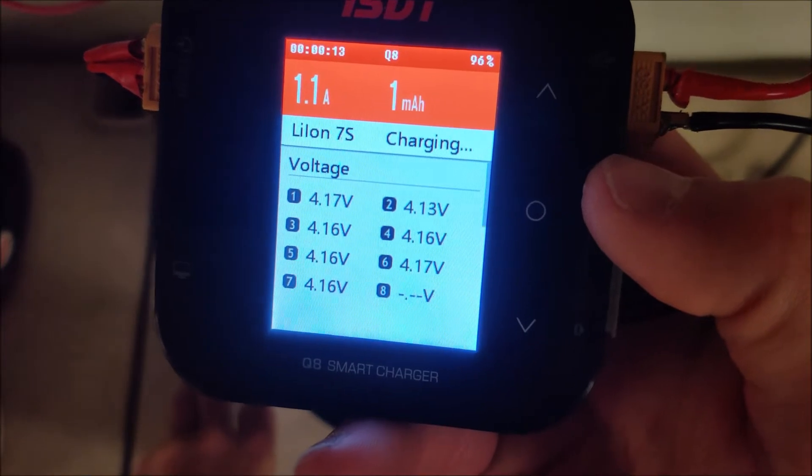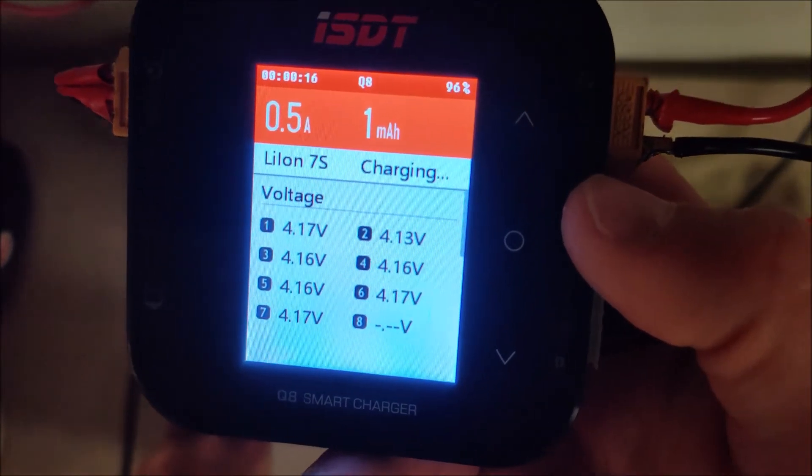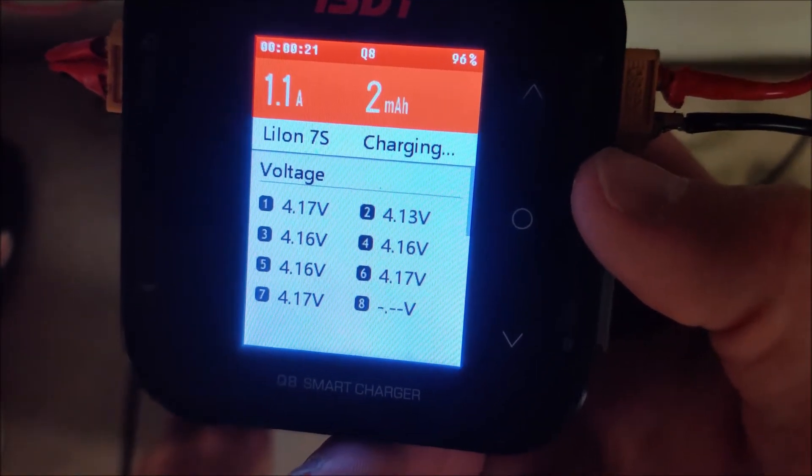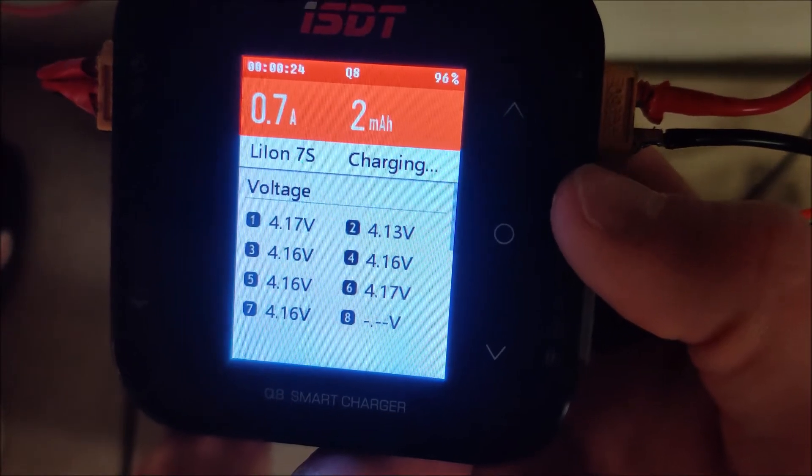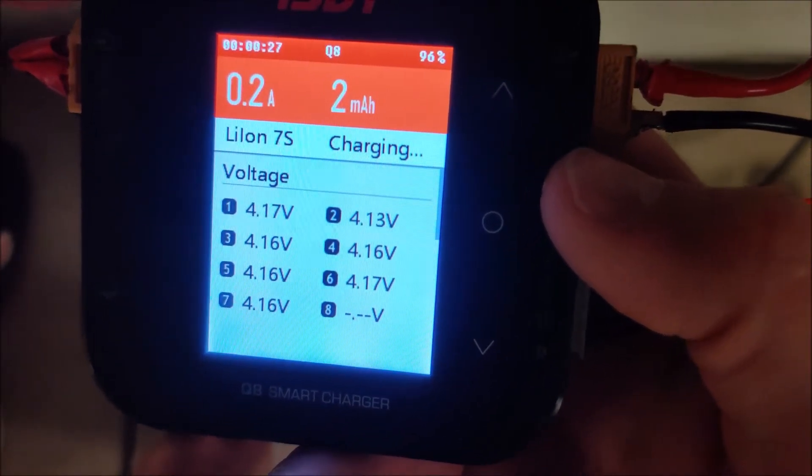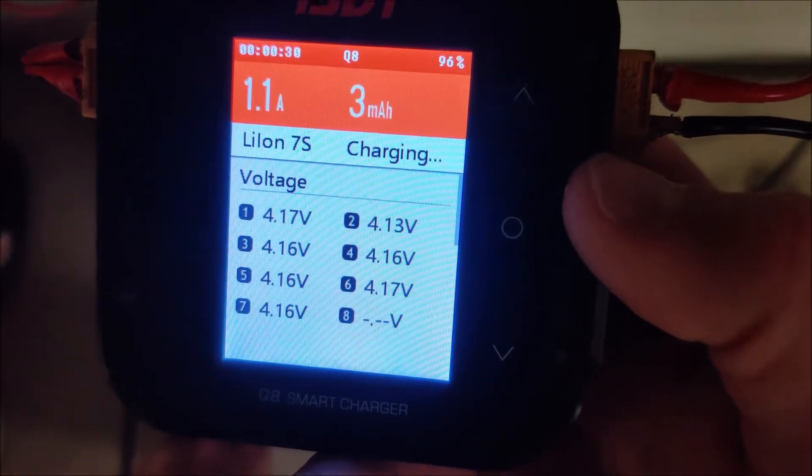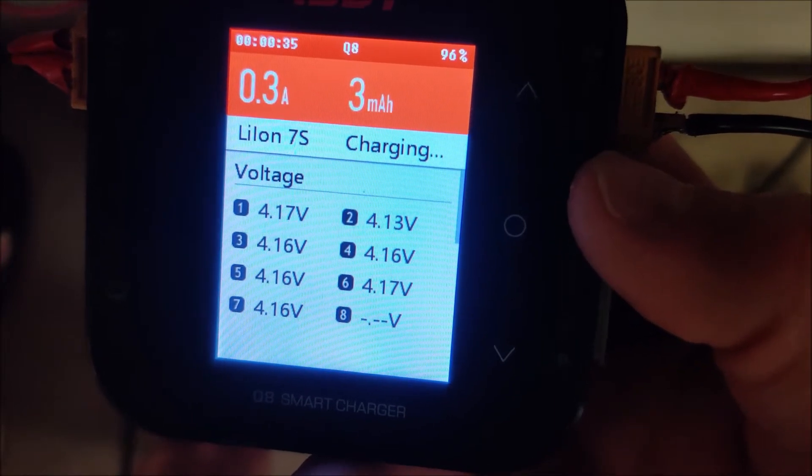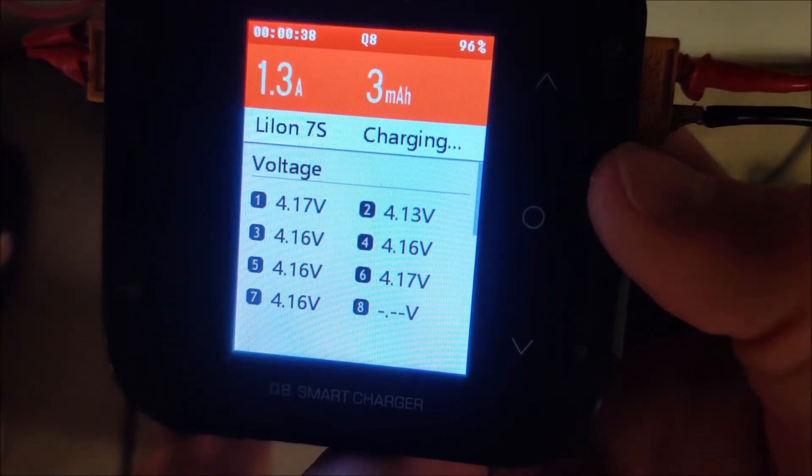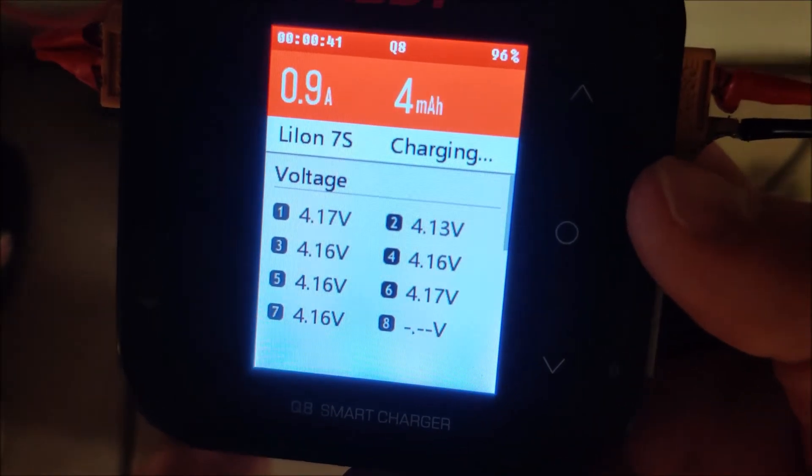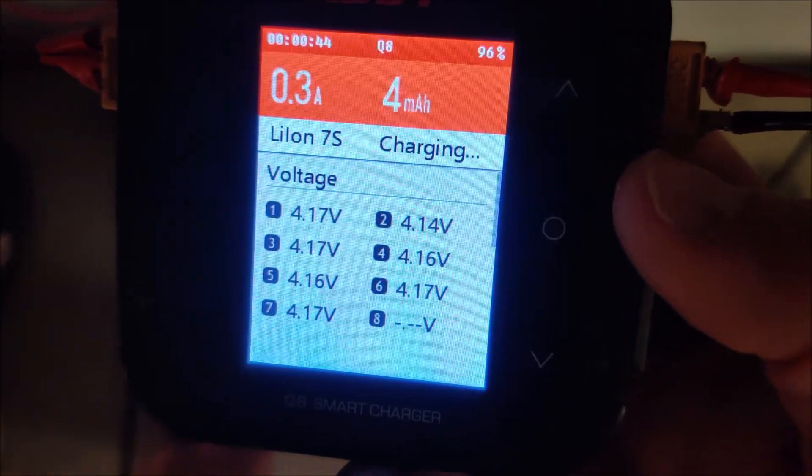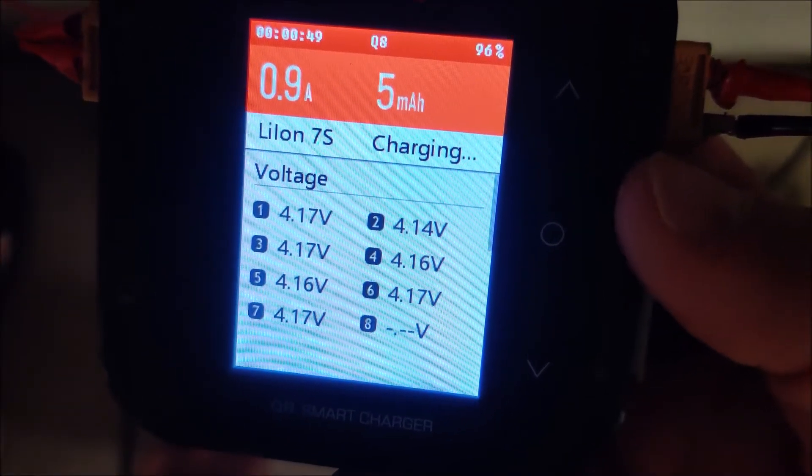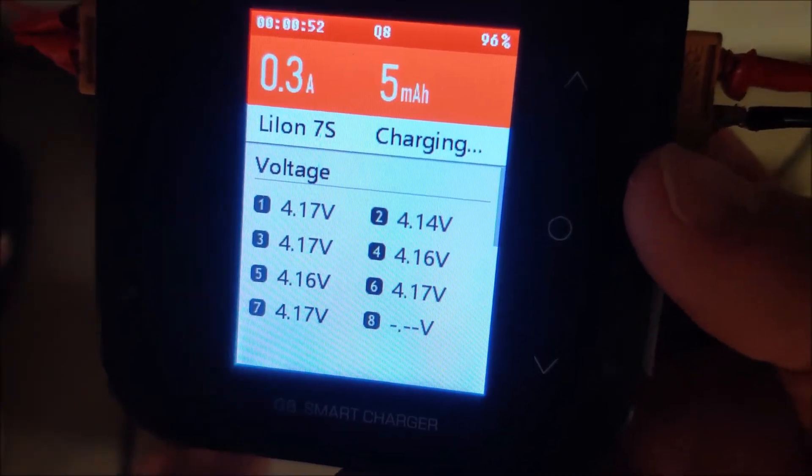You'll notice that only cell two is below 4.15. I'll be interested to see how it handles this because all the other batteries are already over 4.15. So in theory, it doesn't need to charge those. It only needs to charge cell two. So I'm interested to see how it handles this. In theory, it almost needs to bring down all the packs except for cell two. So I'm going to let this run for a second and we will see how it handles things. Actually, it's already bringing up pack two. Pack two is already risen up.